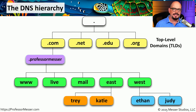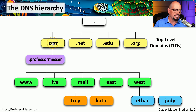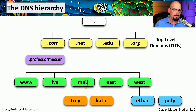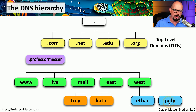When we say that the DNS database is a hierarchy, this is a visual representation of what we mean. Underneath the top-level domains is a domain name such as professormesser.com. You'll notice there is the .com, and just under the .com is the .professormesser. You can continue to add layers to this hierarchy. For example, our web server at Professor Messer is www.professormesser.com. We might also have a mail.professormesser.com, and so on.